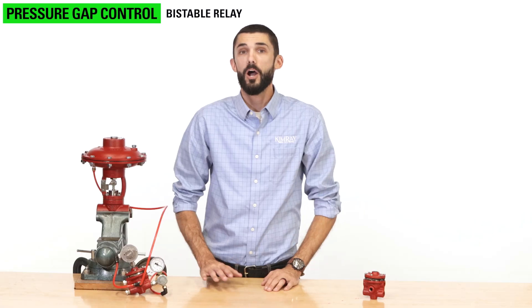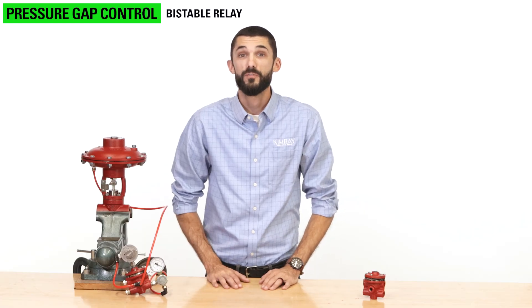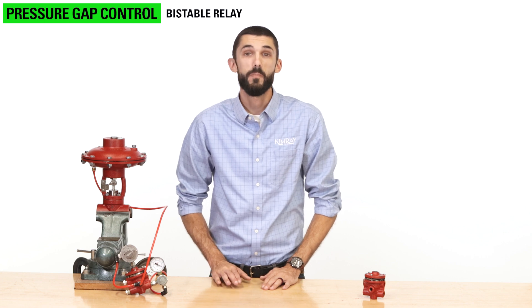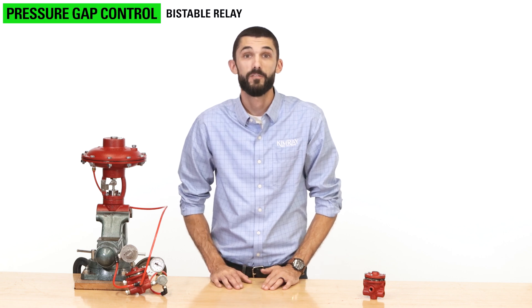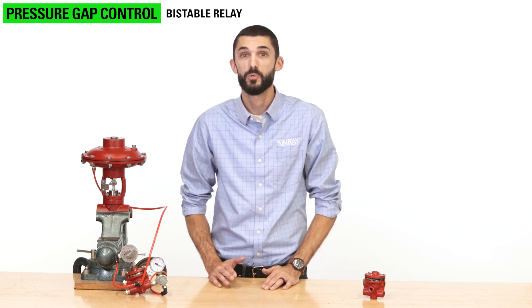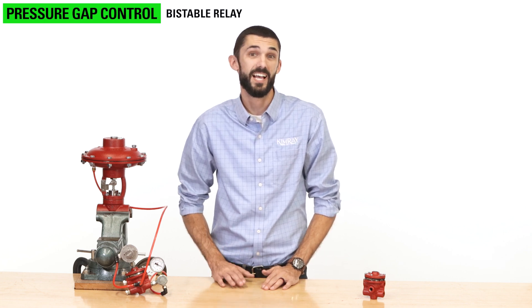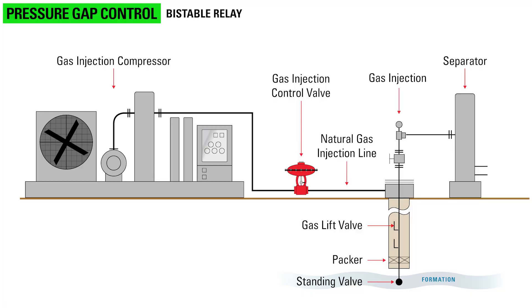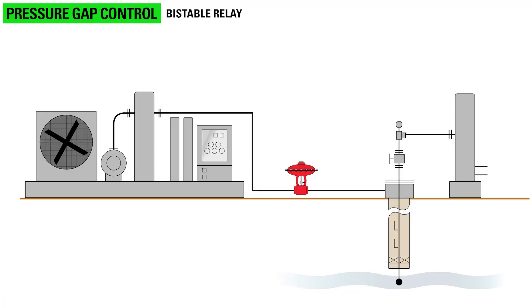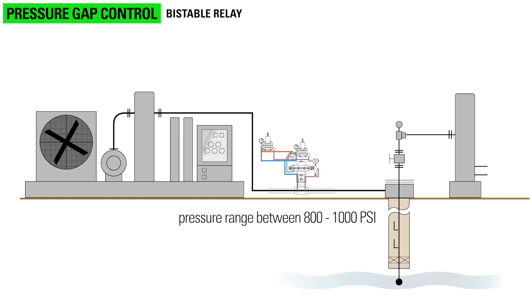One common application for the bistable pneumatic relay for pressure gap control is in a gas lift well. Instead of taxing the compressor by putting a specific pressure down hole, a producer sets the pressure range between 800 and 1000 psi.